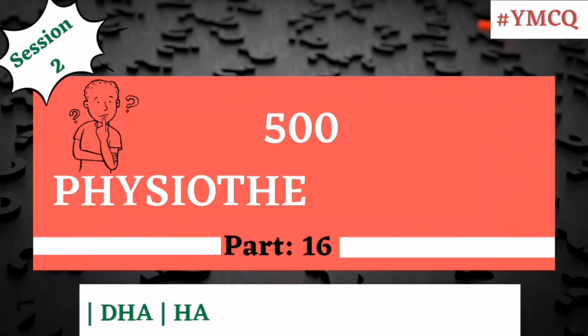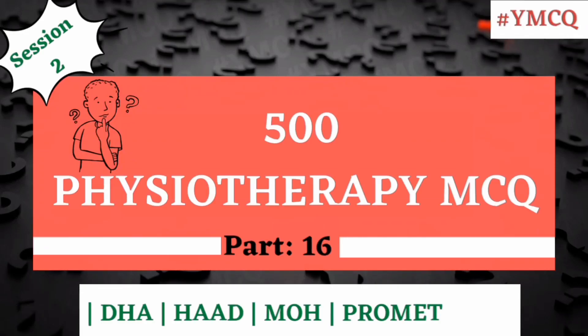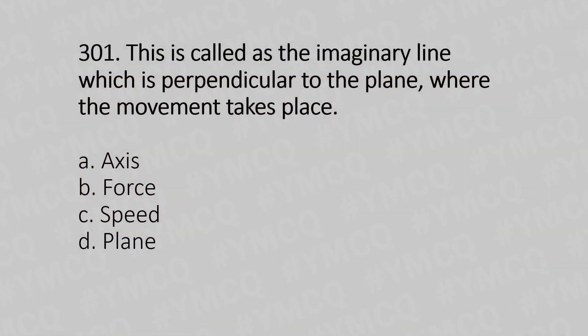Hello, welcome to Part 16 of the 500 Physiotherapy MCQ series. In the description, we have given simple explanations for each and every question, with detailed explanations inside our Telegram channel. Question 301: This is called the imaginary line which is perpendicular to the plane where movement takes place. Option A: axis. Option B: force. Option C: speed. Option D: plane. The answer is Option A, axis.